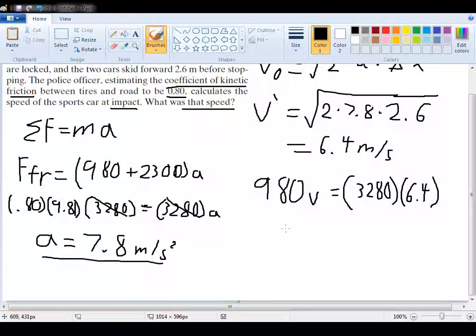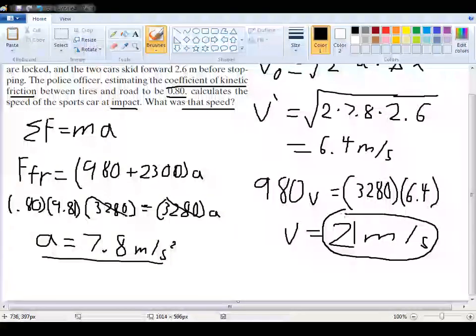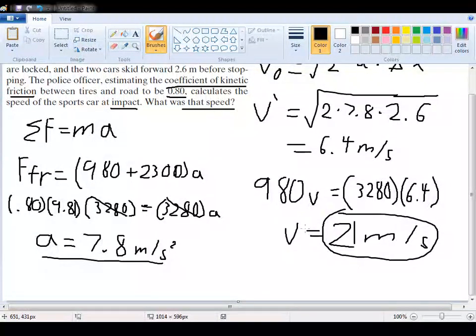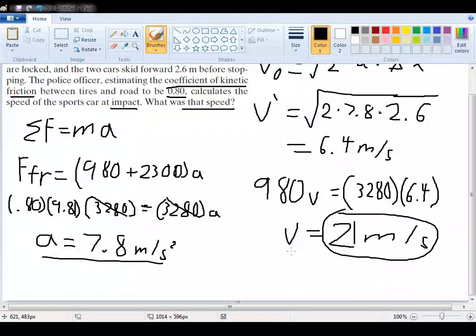So now just multiplying these two together and dividing that by 980 would give us 21 meters per second as a final velocity, or not final velocity, but this would be the velocity of the car just before it collides with the stopped car. There you have it.